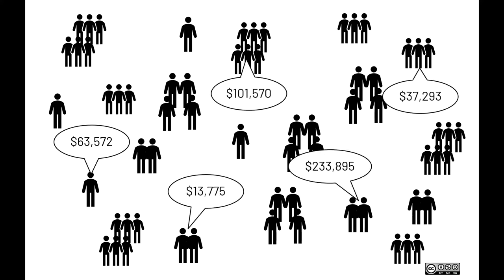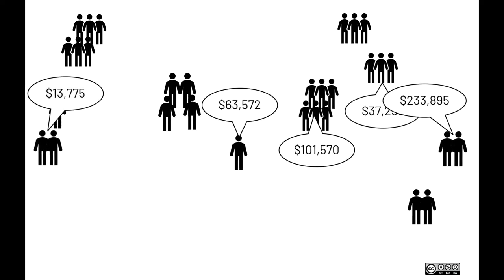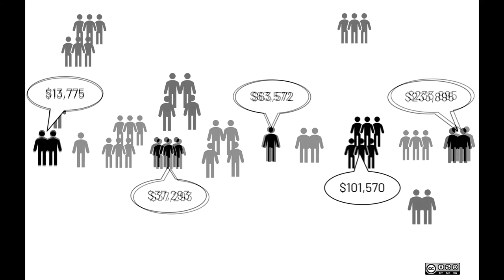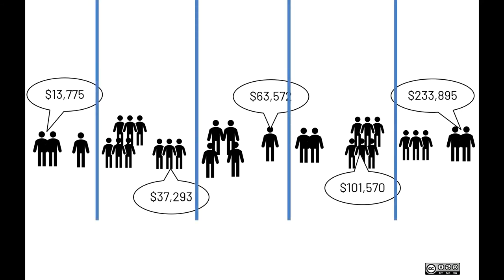The screen is getting pretty crowded, so let's remove some of the households. Next, the Census Bureau lines up the households from lowest to highest income until it looks something like this. Finally, the Census Bureau divides them into five equally sized groups. Each group has the same number of households in it, not necessarily the same number of people. In this example, each group has two households in it.